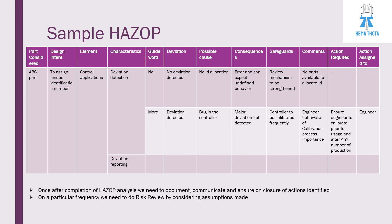Once the hazard analysis is complete, document it and communicate it to relevant stakeholders, and ensure closure of all identified actions. On a regular frequency — such as once every six months or once a year — revisit the hazard analysis and review the assumptions made during element identification and characteristics definition, revising as needed. If you like this content, click the like button, and subscribe to the channel for more automotive videos.